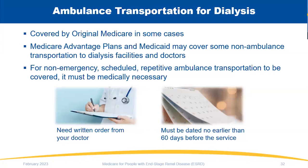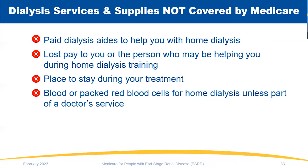For ambulance transportation for dialysis: it's covered by original Medicare in some cases. Medicare Advantage plans and Medicaid may cover some non-ambulance transportation to the dialysis facility and to the doctor. For non-emergency scheduled repetitive ambulance transportation to be covered, it must be medically necessary — you'll need a written order from your doctor dated no earlier than 60 days before the service. Dialysis services and supplies NOT covered by Medicare include paid dialysis aids, lost pay for you or the person helping during home dialysis training, a place to stay during treatment, and blood or packed red blood cells for home dialysis unless part of the doctor's services.